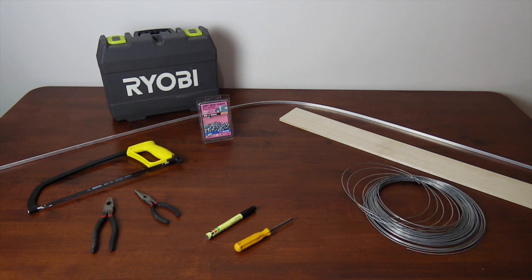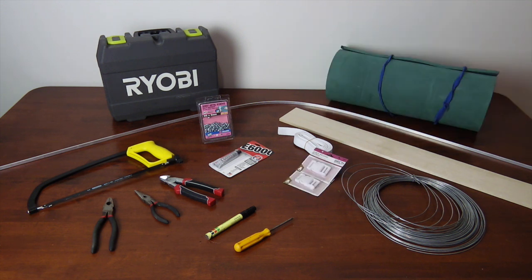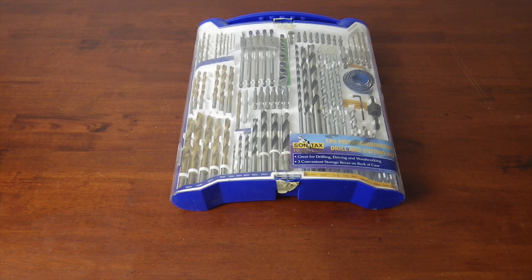Wire, wire snips, E6000 glue, two and a half to three meters of cotton belting, two buckles, foam, and also a drill and drill bits.